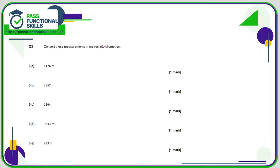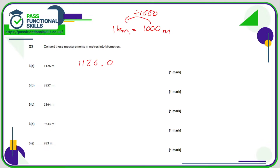Here we're converting metres into kilometres. One kilometre equals 1000 metres, so metres into kilometres means dividing by 1000. I'm going to write 1126 as a decimal: 1126.0. Since 1000 has three zeros, move the decimal point three positions to the left to make the number smaller. It moves from between the 6 and 0 to between the 1 and 1, giving 1.126 kilometres.